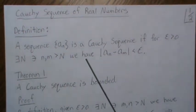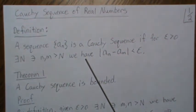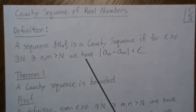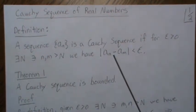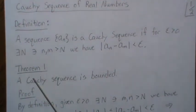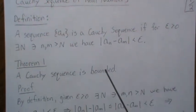And this is going to end up being a pretty powerful property for us. One of the reasons, well, I'll come back to that in a second. So Theorem 1: a Cauchy sequence is bounded.